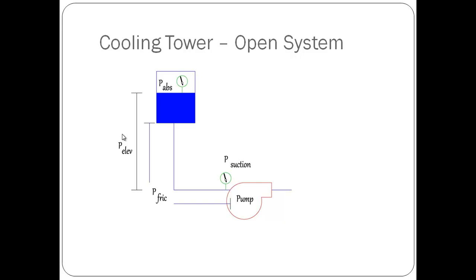Net positive suction head available is found by determining all the pressures acting upon the fluid, whether positive or negative. This figure describes all the pressures that may be acting on the pump for an open system like a cooling tower system.